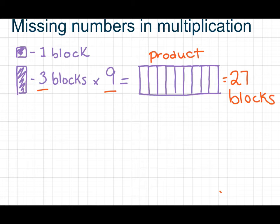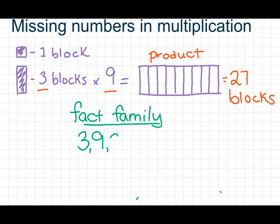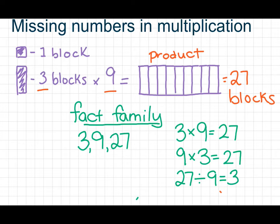Recall, too, that this is a fact family. And a fact family in multiplication is where you can make four different problems out of three numbers. And the three numbers are 3, 9, and 27. And here are the four problems we can make. We have 3 times 9 is 27. 9 times 3 is 27. So these are our factors in this fact family, in this multiplication problem.